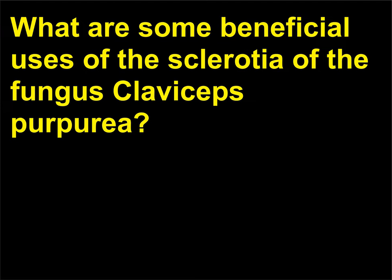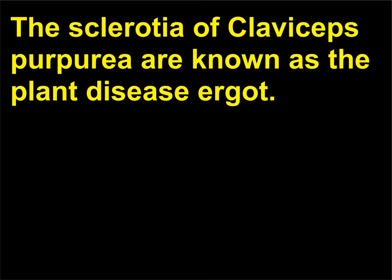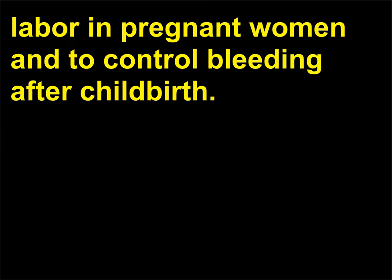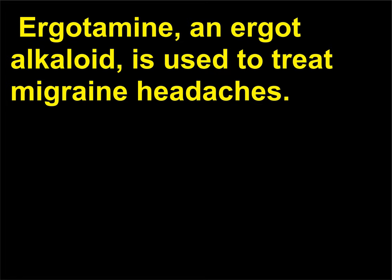What are some beneficial uses of the sclerotia of the fungus Claviceps purpurea? The sclerotia of Claviceps purpurea are known as the plant disease ergot. Ergot is used pharmaceutically to produce drugs used to induce labor in pregnant women and to control bleeding after childbirth. Ergotamine, an ergot alkaloid, is used to treat migraine headaches.